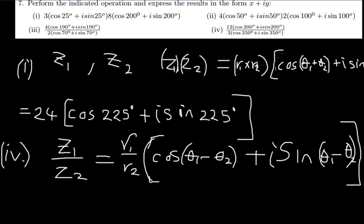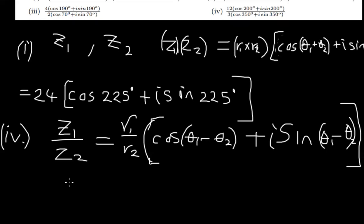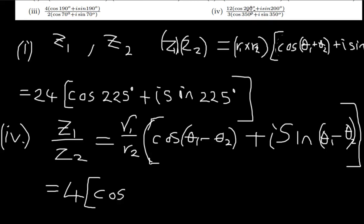Now let us solve question four. I divide the magnitudes: 12 divided by 3 gives 4. Then I open the curly brackets and write cos, subtracting the denominator's argument from the numerator's: 200 minus 350 gives negative 150. So I have 4[cos(−150°) + i·sin(−150°)].